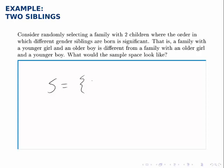Well, in a family with two children, either they could both be girls, or they could both be boys, or you could have one girl and one boy.